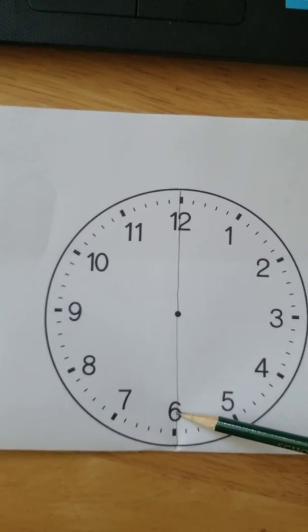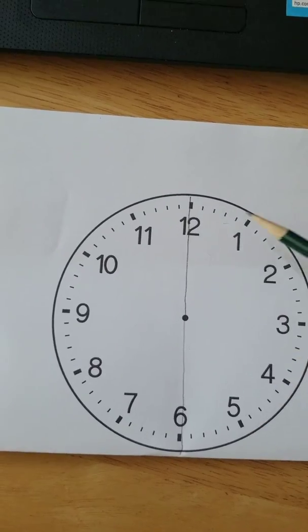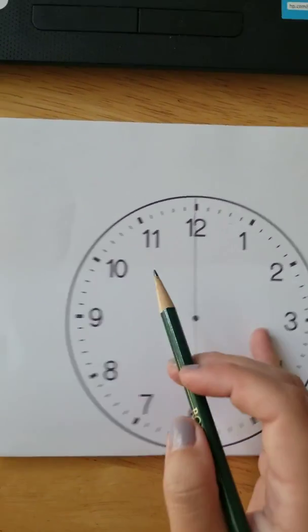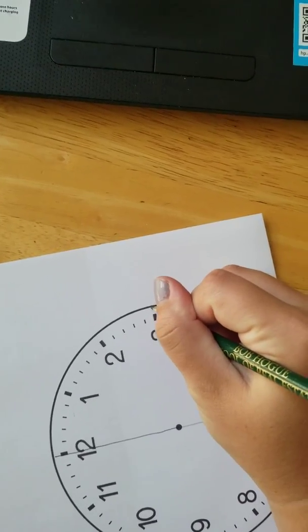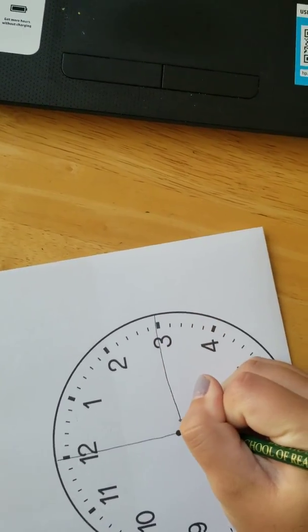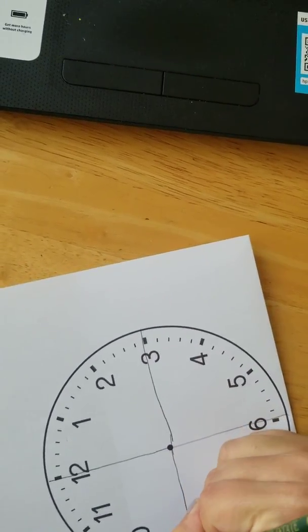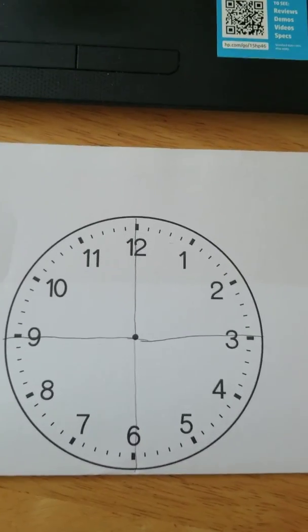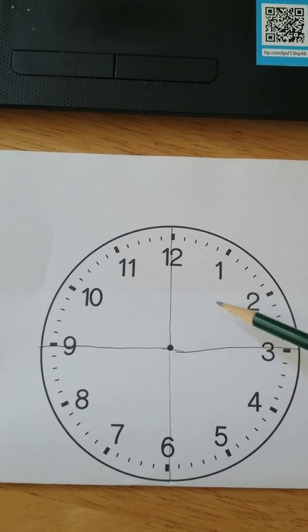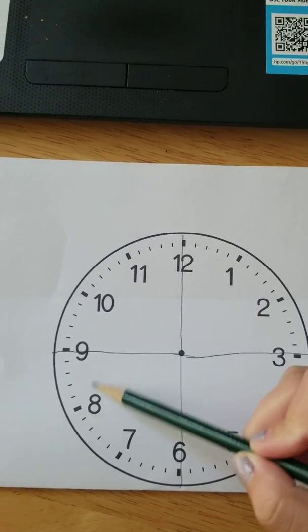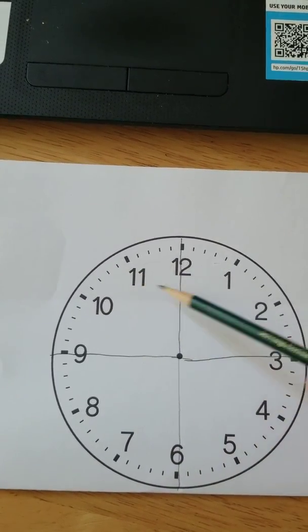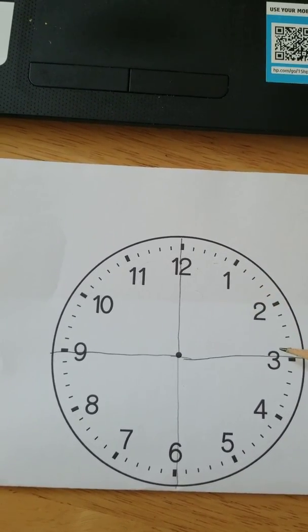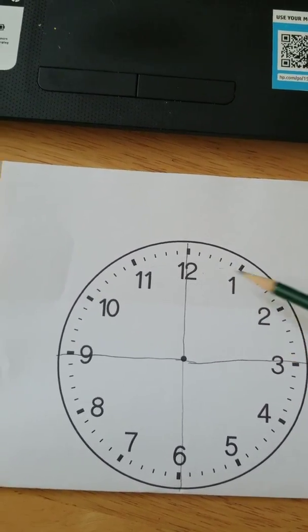The next way I'm going to cut it is from the 3 to the 9. These are our quarters, these are fourths. Here's one fourth, two fourths, three fourths, four fourths. Each fourth is 15 minutes: 5, 10, 15. So each quarter hour is 15 minutes.